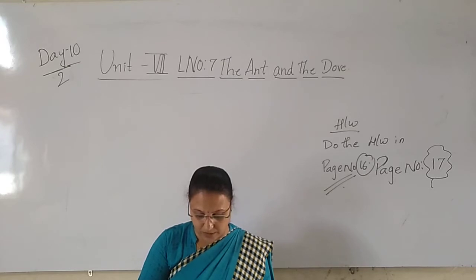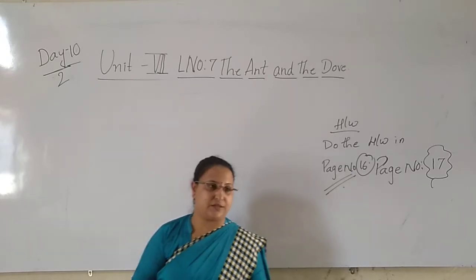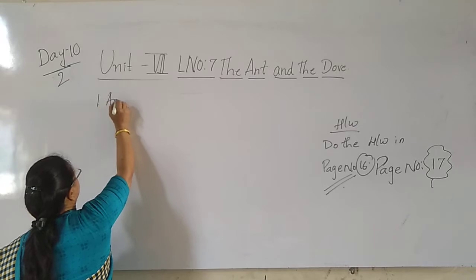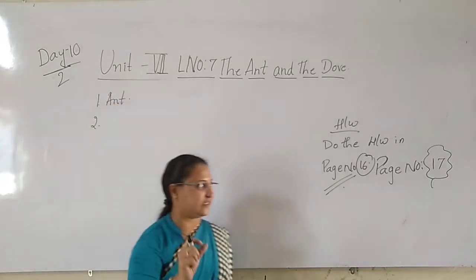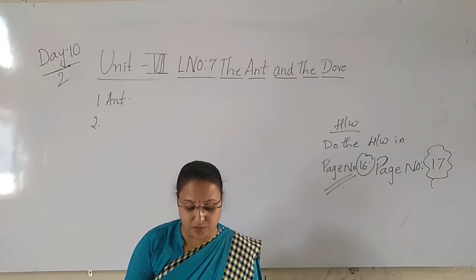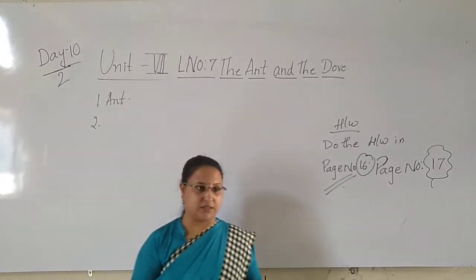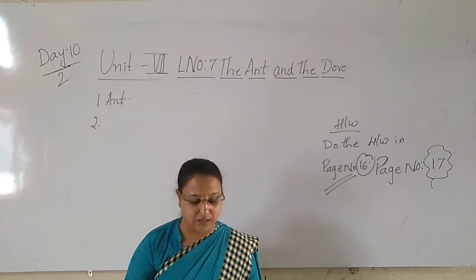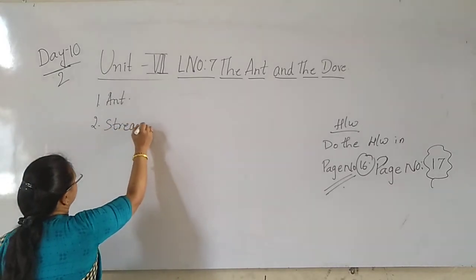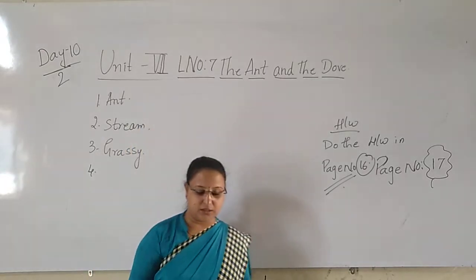A little ant was moving on the grassy bank of a quiet stream. Grassy — there was a little ant. It was moving on the grassy bank of a quiet stream. Grassy means everywhere you can see there was grass near the water, near the river. We can find there was lots of grass. And there was a stream — stream is where the water flows.